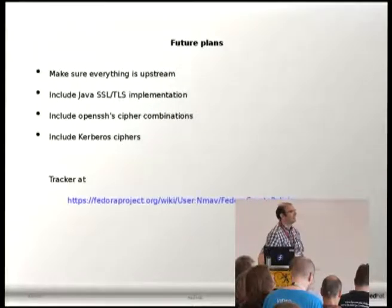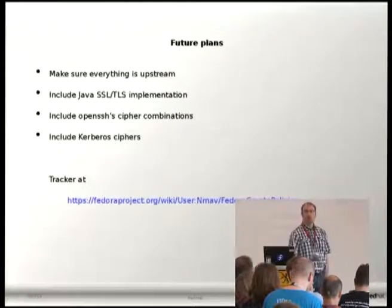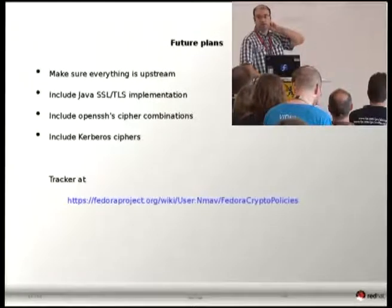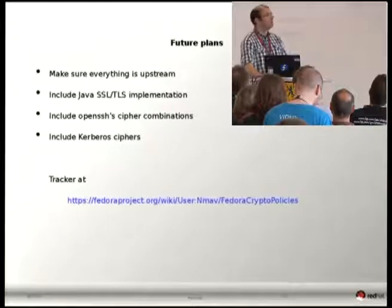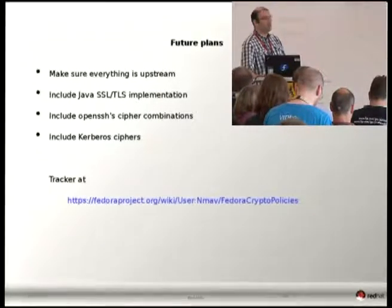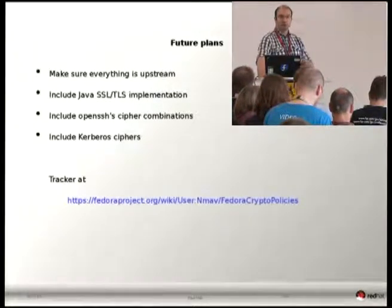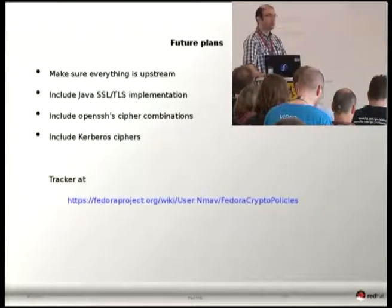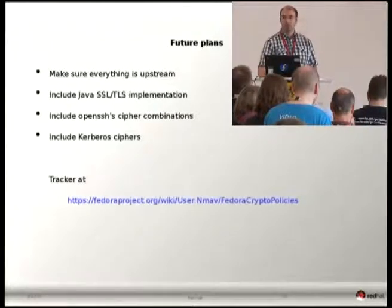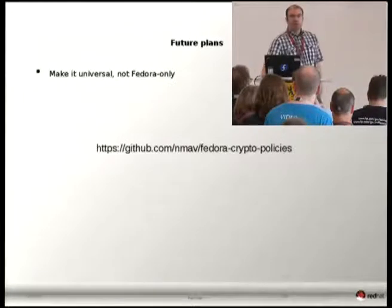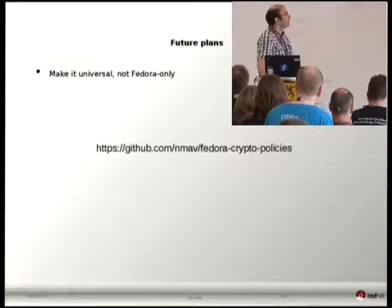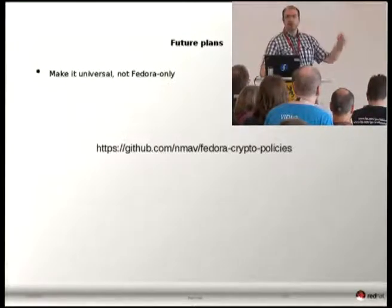What are our future plans? Our first priority is to make sure everything we have contributed to NSS and OpenSSL is upstream. We would like to include the Java SSL and TLS implementation in the policy, and that part might be easier than we initially thought. Probably in the future we'll include OpenSSH, Kerberos, or even GnuPG in the policy, so that you set up your security level centrally across the entire operating system — irrespective of TLS or whatever protocol — for everything that relates to crypto. The reason I'm here is that we want to make this policy not Fedora-only but universal.